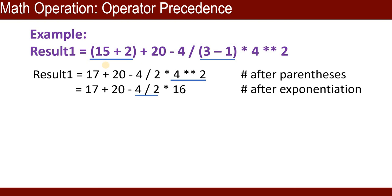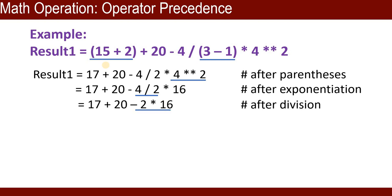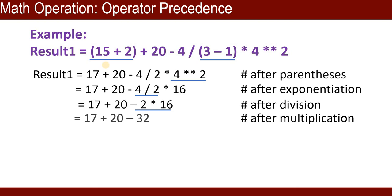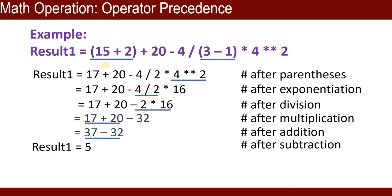After the exponential, we solve division: 4 divided by 2 equals 2. Now 2 times 16. After division, we solve multiplication: 2 times 16 equals 32. We now have 17 plus 20 minus 32. After multiplication, we solve addition and subtraction. Plus comes first from the left, so 17 plus 20 equals 37. Then 37 minus 32 equals 5. Result equals 5.